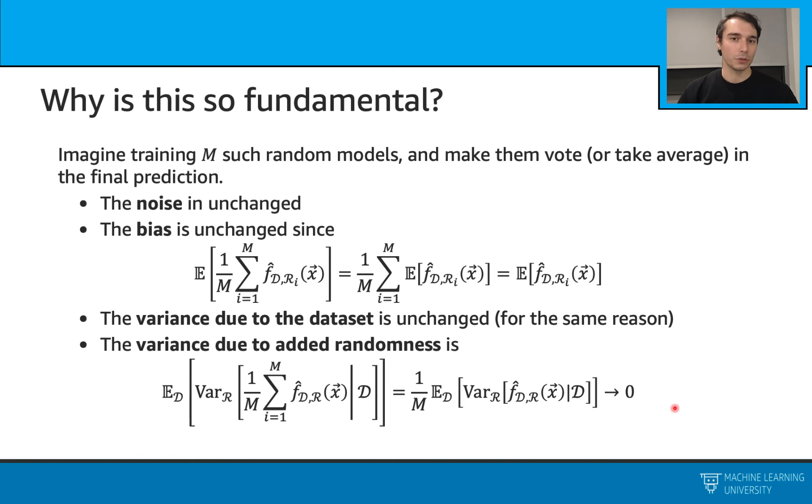It can even go to zero for m's very, very large. In this case, we can see that this variance due to the added randomness can just go away when we have multiple of these random models in this process.